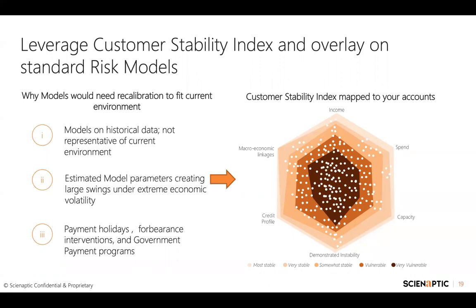There is a need to make those adjustments. We all know how payment holidays and forbearance innovations have clouded our typical indicators of delinquencies that are often used to project future losses. One way to triangulate model predictions and create better insights would be to overlay what we call a customer stability index onto existing risk models. The concept is intuitive: two customers — one with a FICO score of 750, another with 650 — but the customer with a better score of 750 drops to 600 during a stress environment, while the other drops from 650 to 600. One would consider the second customer more resilient in that stress period than the first.